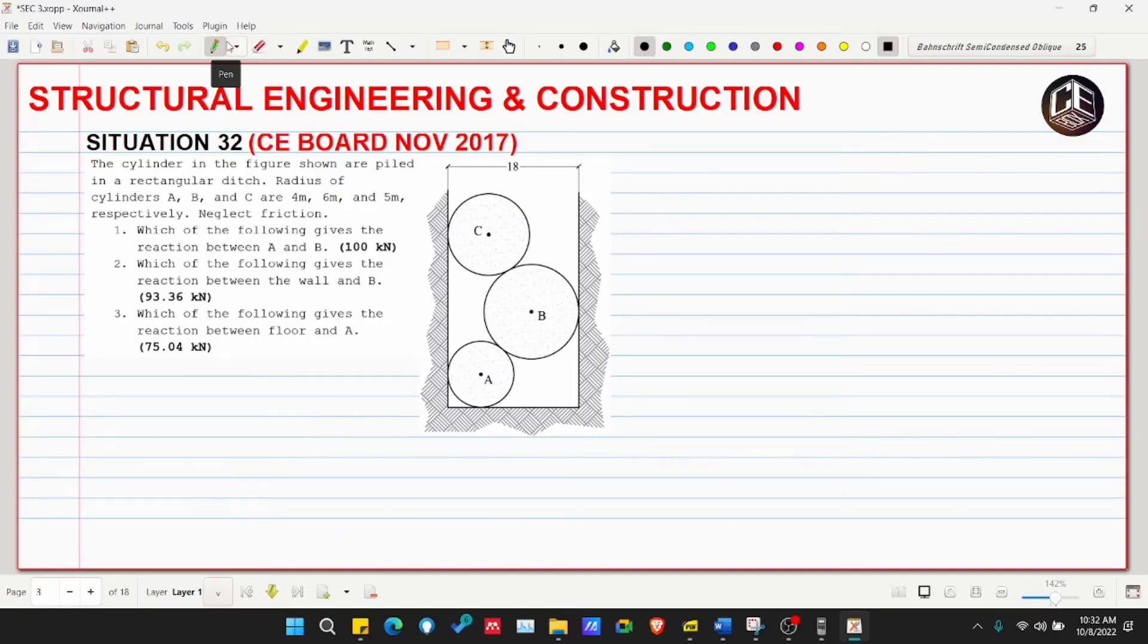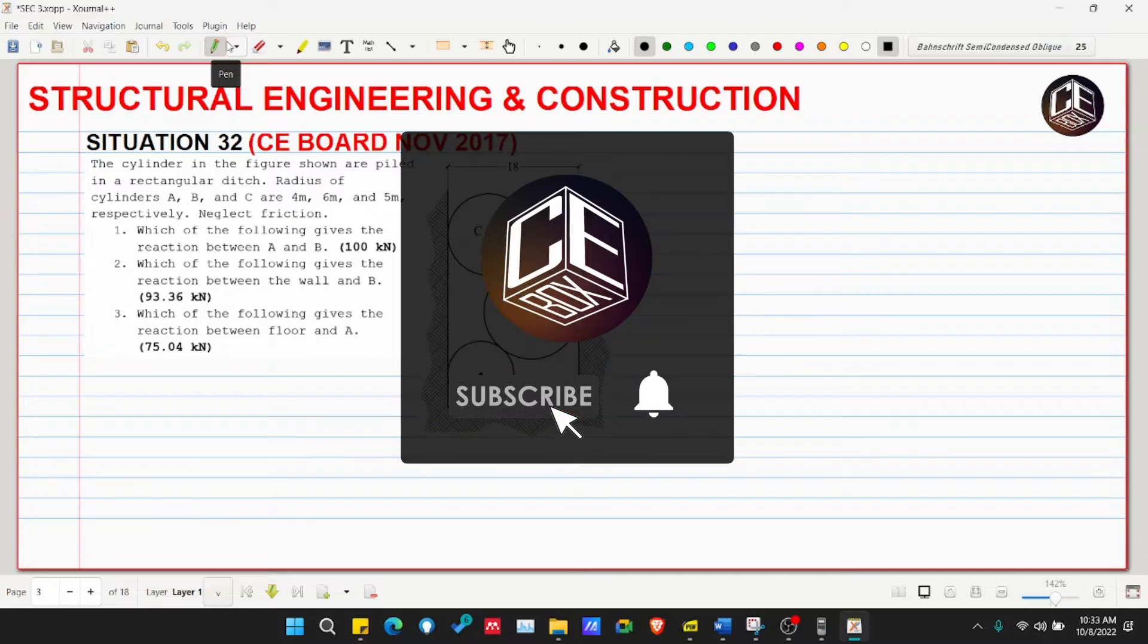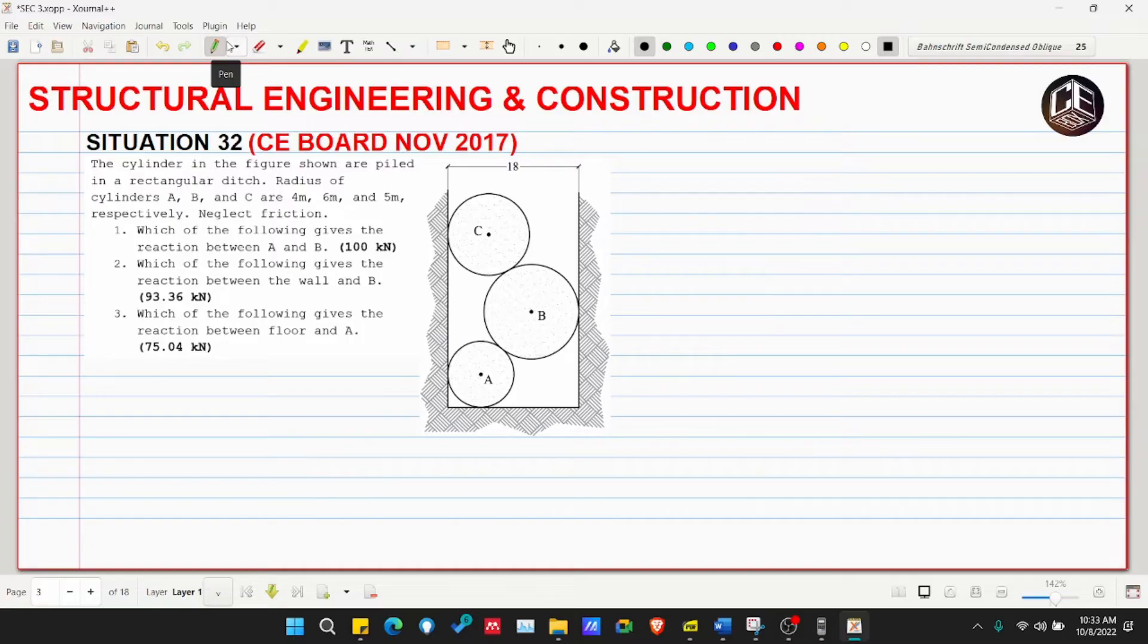Hey guys, welcome back to C-Box Tutorial Channel. This is Situation Number 32 for CE Board Exam November 2017 for Structural Engineering and Construction. The cylinders in the figure shown are about an inner rectangular pitch. The radius of cylinders A, B, and C are four meters, six meters, and five meters respectively. Neglect friction.